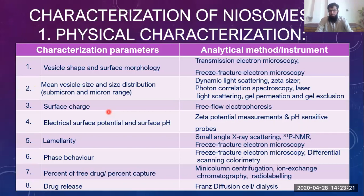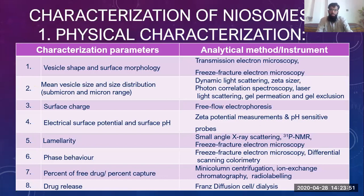In physical characterization, we can assess the shape and surface morphology using electron microscopy. There are two types: scanning electron microscope (SEM), in which we scan the image, and transmission electron microscope (TEM), in which we transmit through the sample. Freeze fracture electron microscopy is also used as a method, and size distribution can be measured by different techniques.